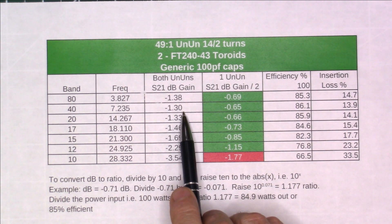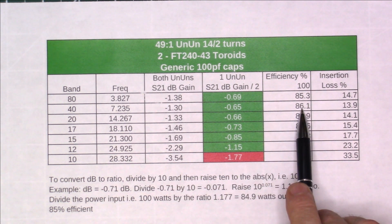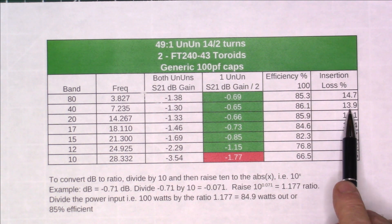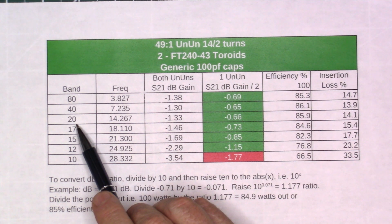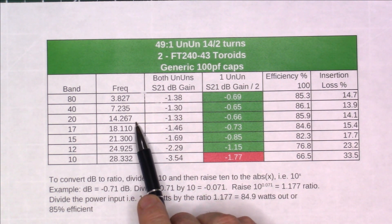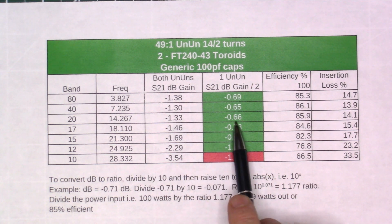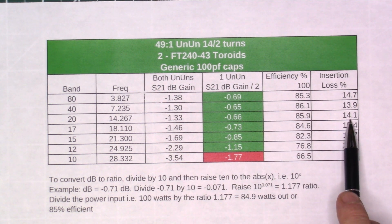Going down to 40 meter band at 7.235, we had a 1.3 dB loss through both, divide that by 2, we get 0.65 dB for 86%. It's come up just a little bit from the previous one, a loss of 13.9 or 14 dB. On the 20 meter band at 14.267, we had negative 1.33 dB through both, 0.66 dB through 1 for an 86%, or 14% loss.